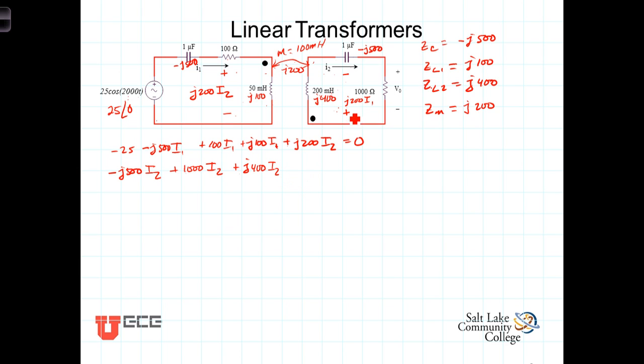And then of course we have the mutually induced voltage here which we've already found to be and because we're going plus to minus it will be a positive sign here plus j200 I1 equals zero. So we've got two equations and two unknowns.